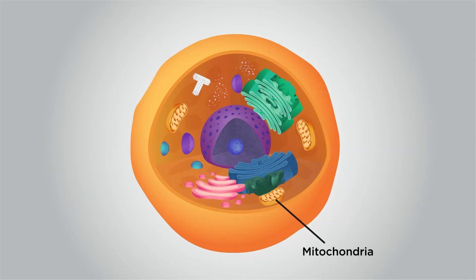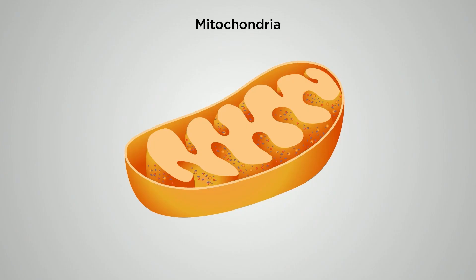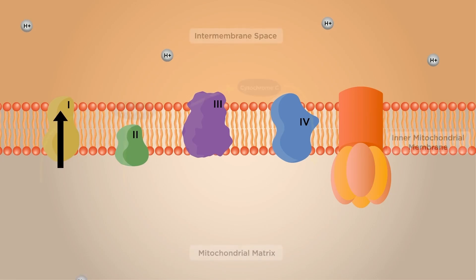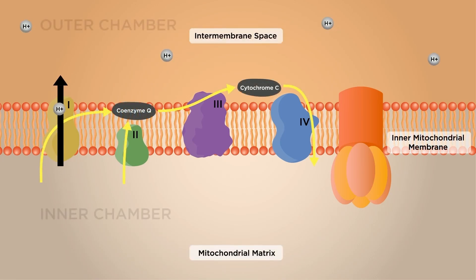Mitochondria have an outer and an inner membrane, similar to the nucleus discussed earlier, each one formed by the same phospholipid bilayer structure that we see in the cell membrane. We can see that the inner membrane is highly folded, with many enfoldings called cristae. The folds provide the inner membrane with a large surface area on which ATP can be generated. The two membranes divide the mitochondrion into two different chambers, each of which performs different functions. The inner chamber is called the mitochondrial matrix, while the outer chamber is called the intermembrane space.